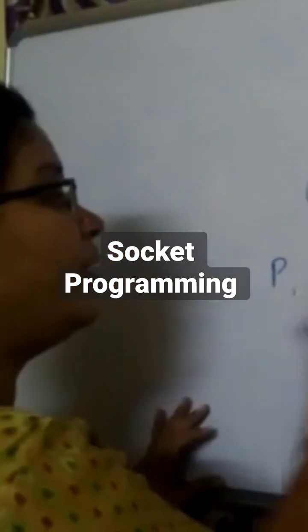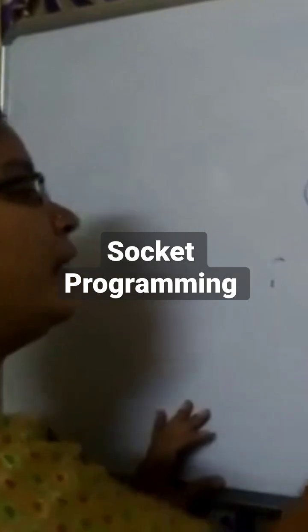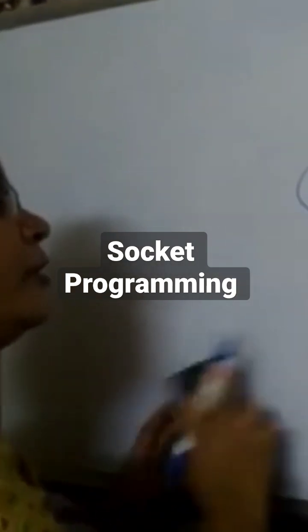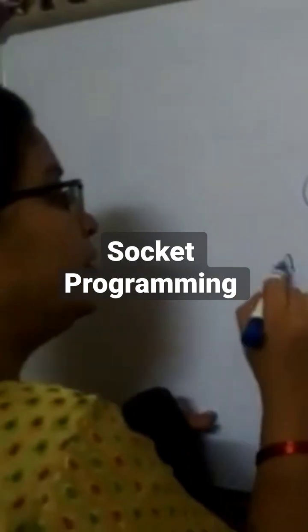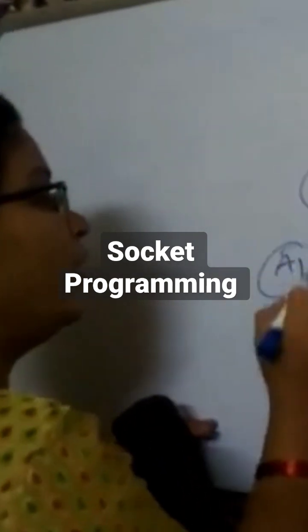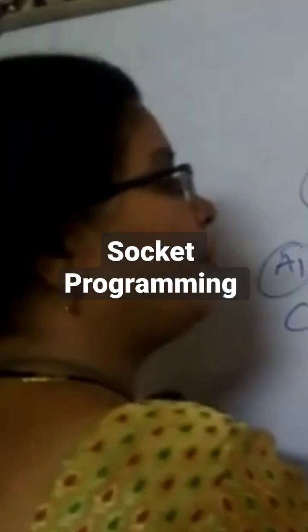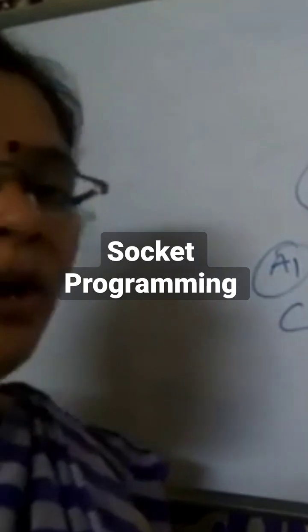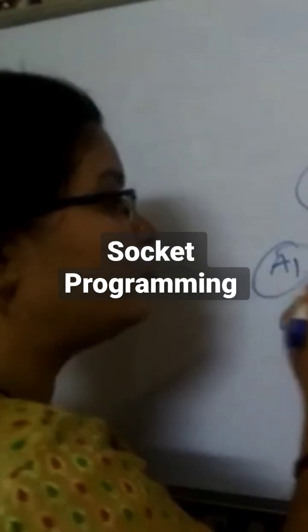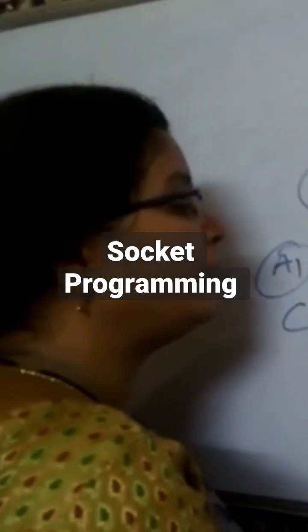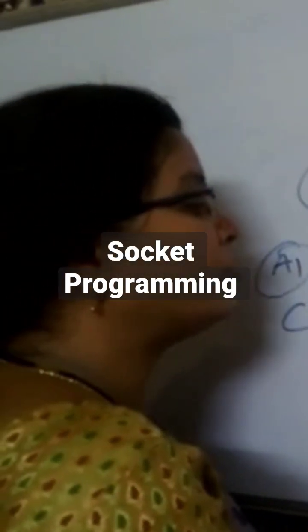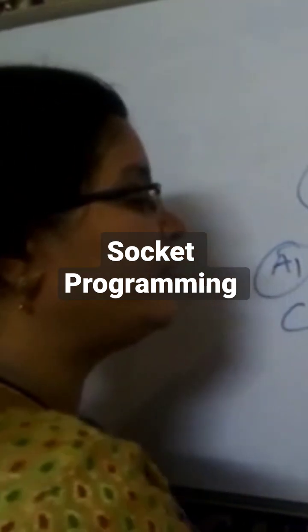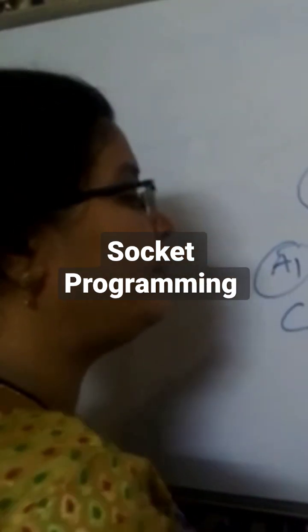In the same manner, whenever an application is running on different machines — this is application one on the client machine, and the same application is running on the server machine — how these two can communicate? These two can communicate with the help of a construct called a socket. This is a construct that can be used by the client machine.